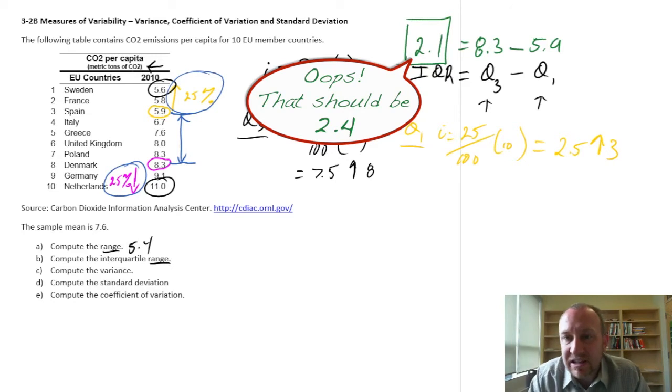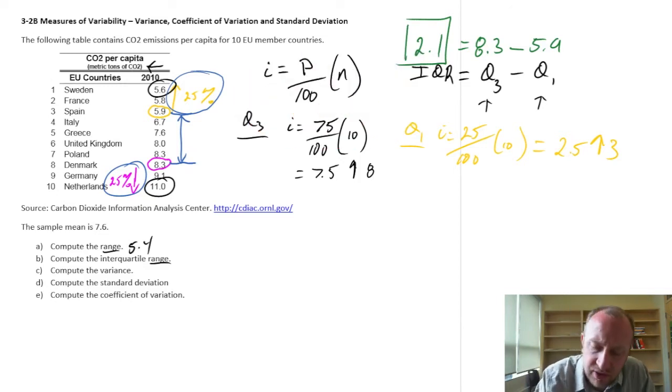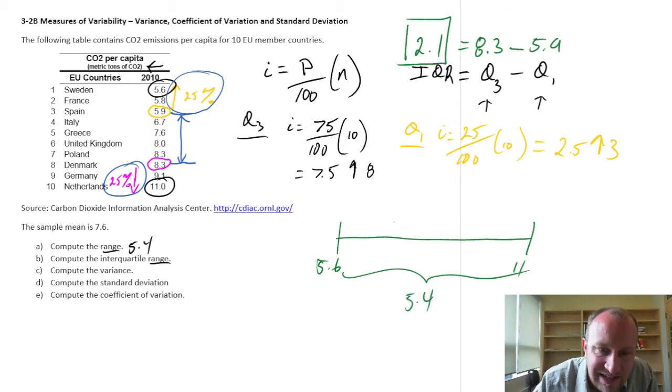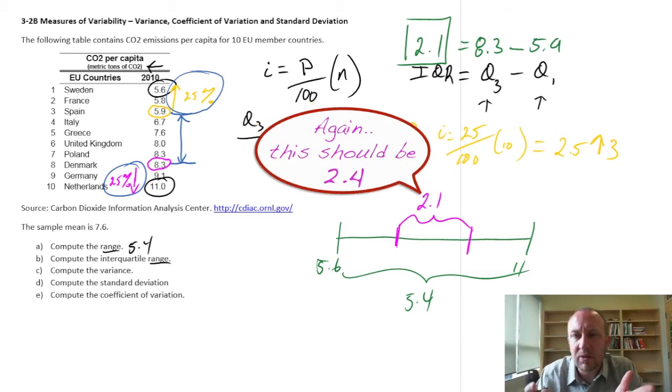The range of the middle 50% covers a spread of 2.1 metric tons per person. So there you have it. We have our range for the whole data set, ranging from 5.6 to 11, so that whole distance is 5.4. Then we isolated just the middle 50%, and that covers the interquartile range of 2.1. Now we have a little bit more information as to how the observations are spread within that data set.